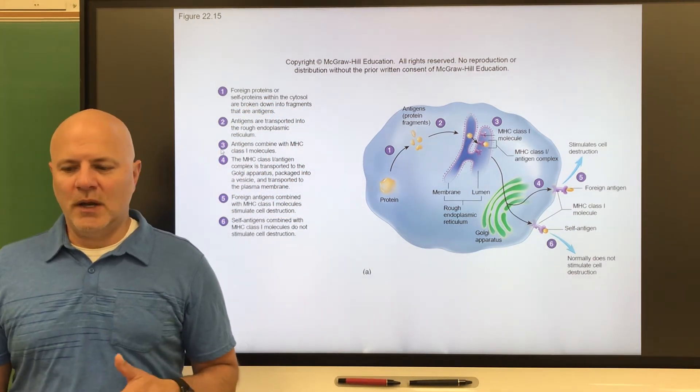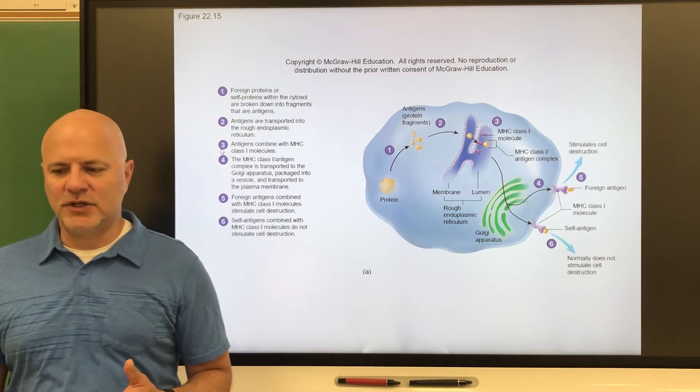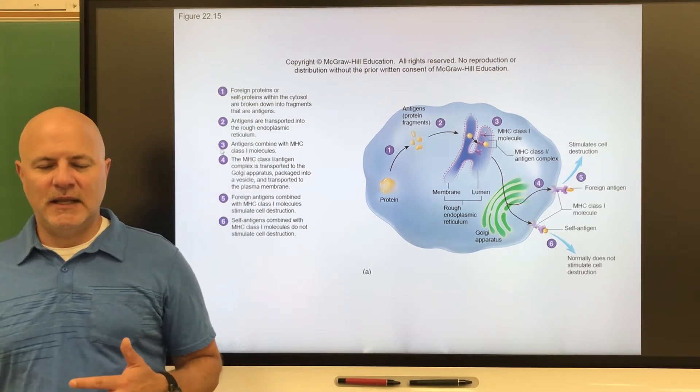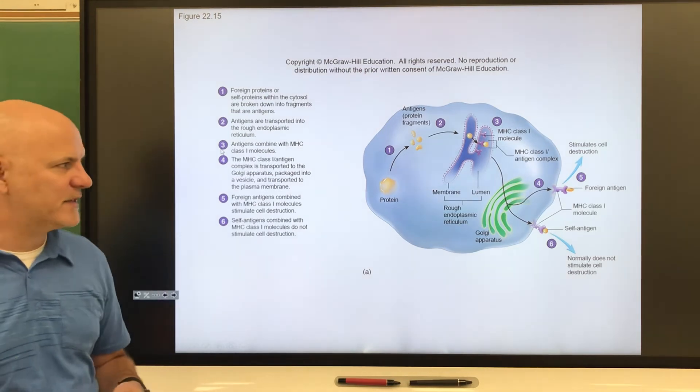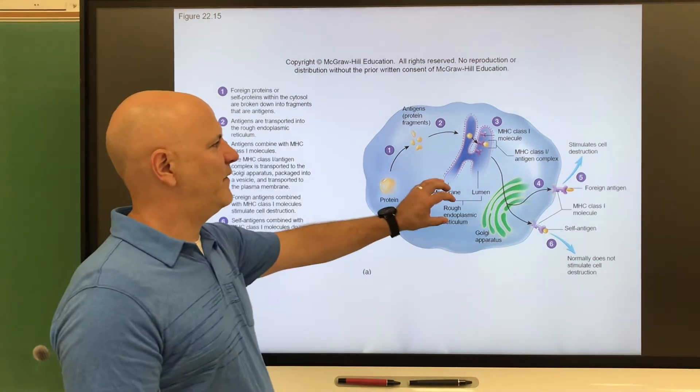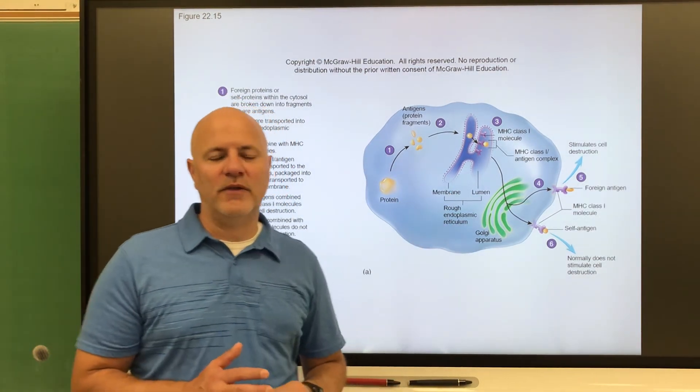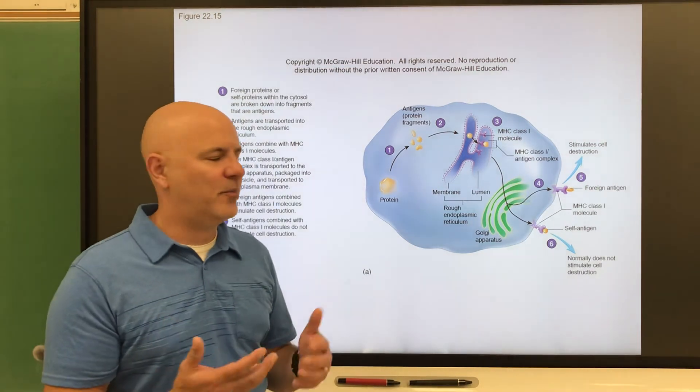The MHC one, these are attached to viral antigens on our self surface and they initiate our white blood cells to kill the cell. This cell is infected with a virus and it's causing the production of more viruses.